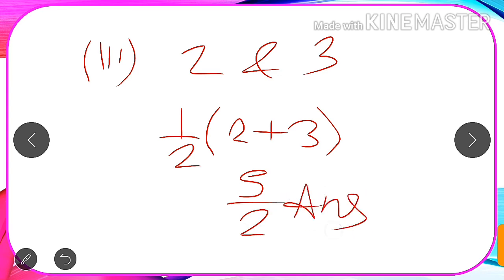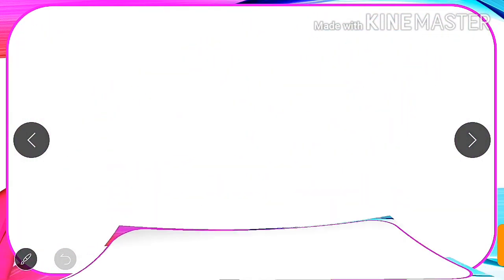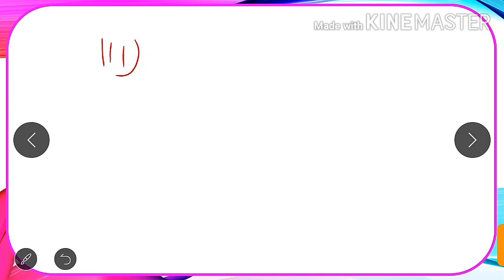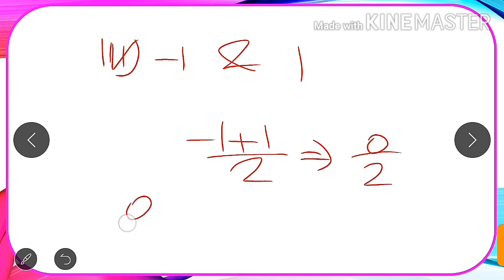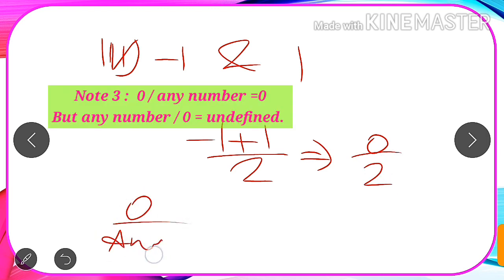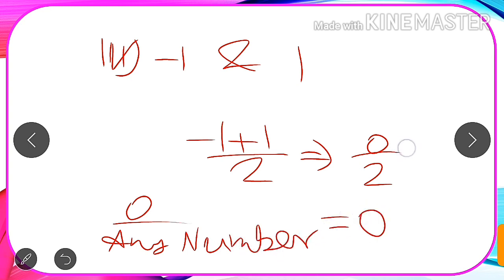Similarly, if we are asked to find one rational number between -1 and 1, we find the average: 1/2 of (-1 plus 1), which gives 0 by 2. We know 0 divided by any number equals 0, so our answer is 0.